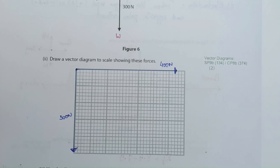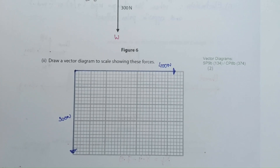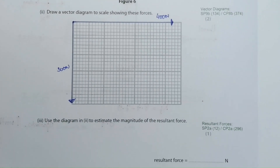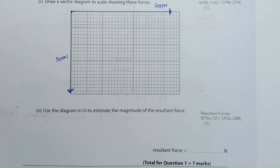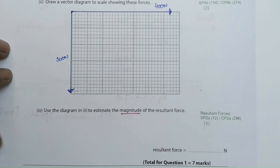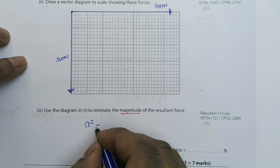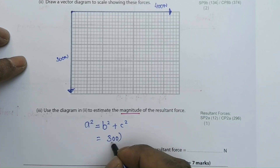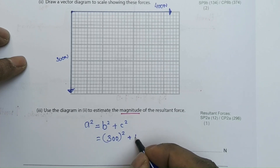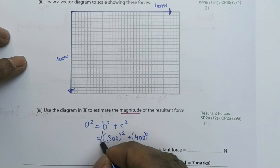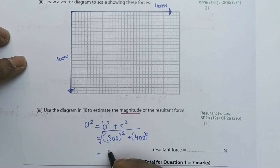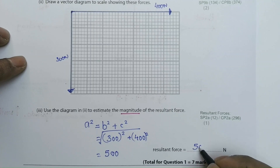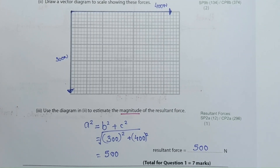Part 3: use the diagram in part 2 to estimate the magnitude of the resultant force. They want you to state the size of the resultant force. How do you calculate it? You would use Pythagoras' theorem. Remember: a² = b² + c². So, if I'm trying to work out the resultant, that will be 300 squared plus 400 squared, then find the square root of that. This should give you an overall answer of 500 newtons.